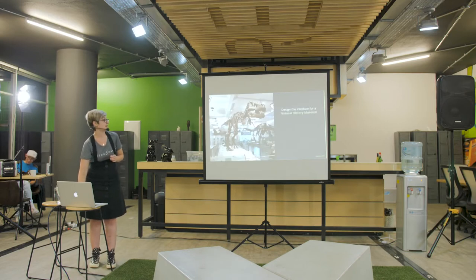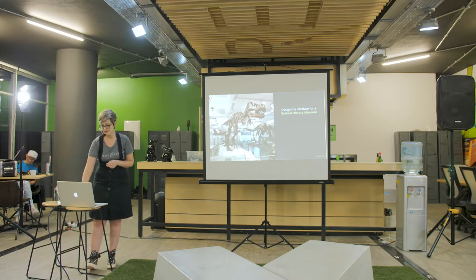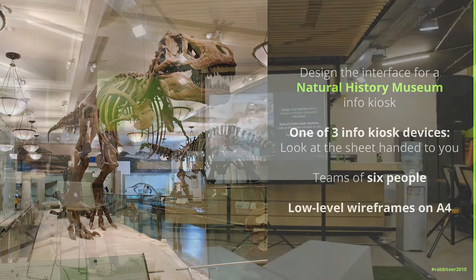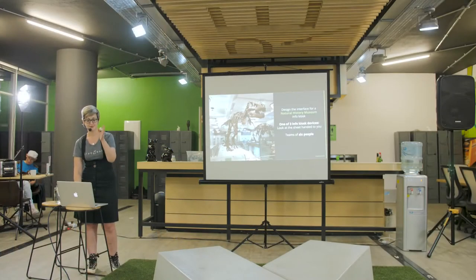We are designing an interface for a natural history museum. There will be one of three info kiosk devices which our helpers will distribute to you. Once you've broken up into teams of six people — look at five other people that you'd like to spend the rest of the evening with and make friends. We'll help you find friends if you don't have any.